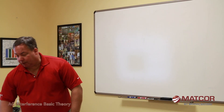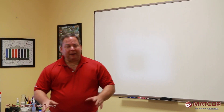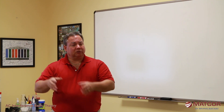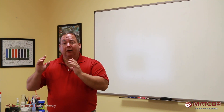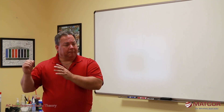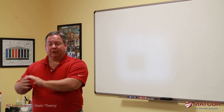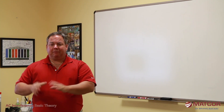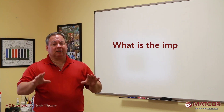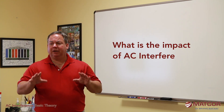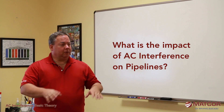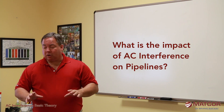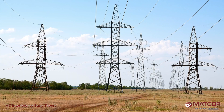In this segment we're going to talk about AC interference. In subsequent segments we'll talk about how you model that, and then in the third segment we'll talk about how you mitigate that. But first, let's talk about what is the impact of AC interference on pipelines. When we talk about AC interference, we're basically talking about power lines — high voltage power lines.